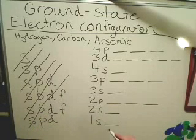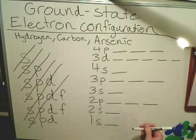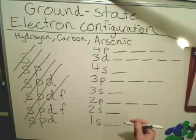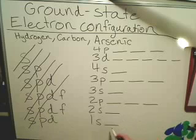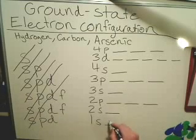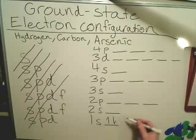Your second rule is, according to the Pauli Exclusion Principle, electrons fill up orbitals in pairs that spin in opposite rotations. So for each orbital, you're going to have two electrons, and they're going to be facing in opposite directions, denoted by these arrows.